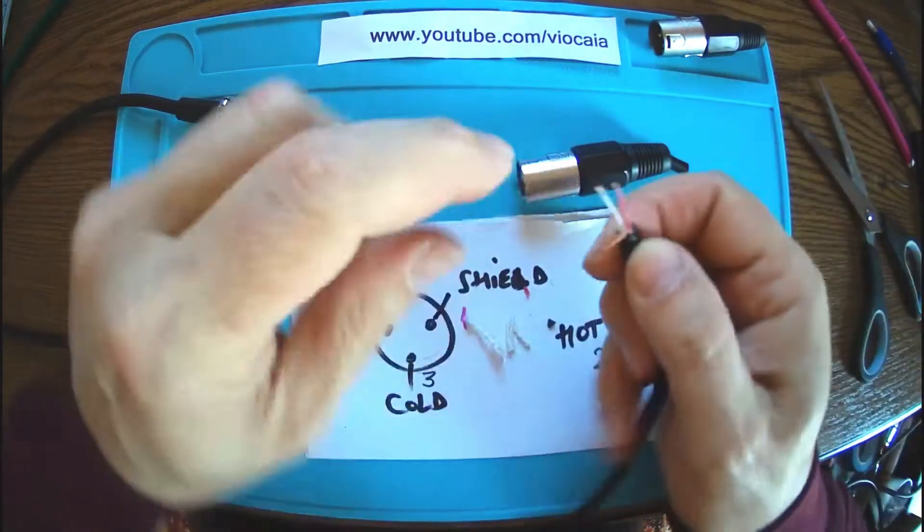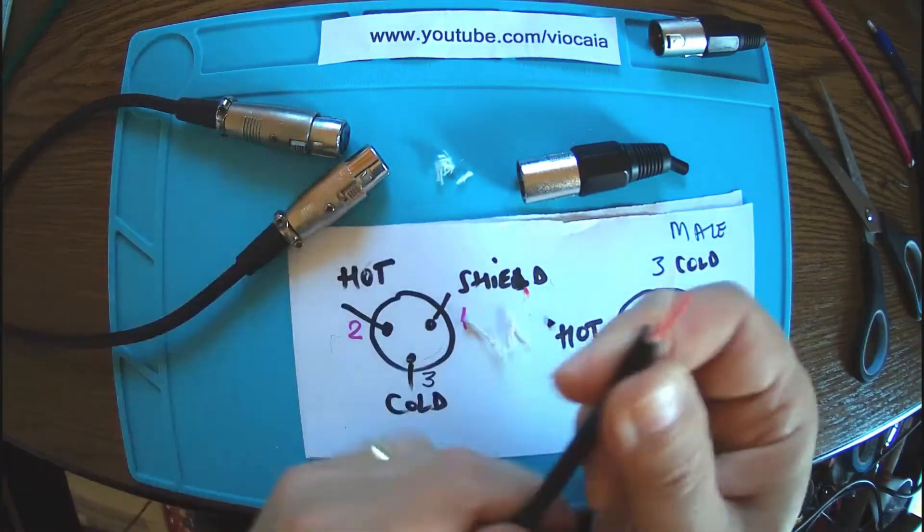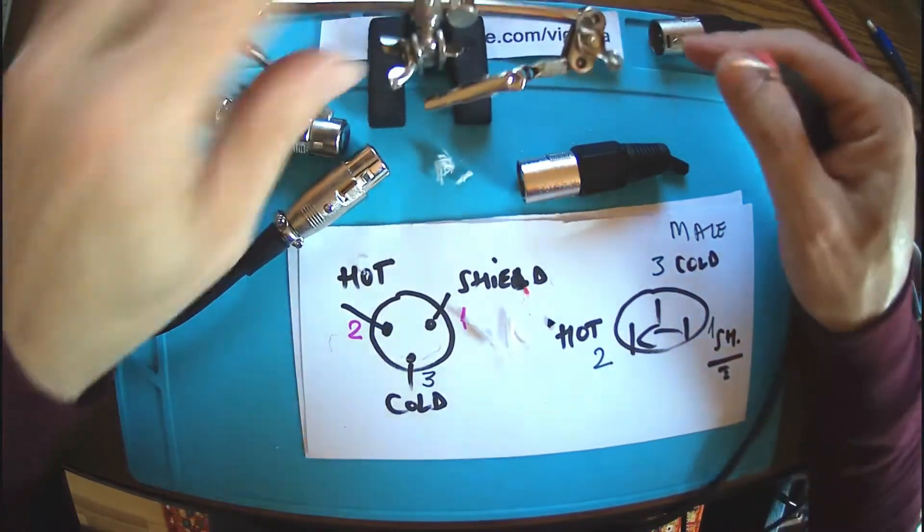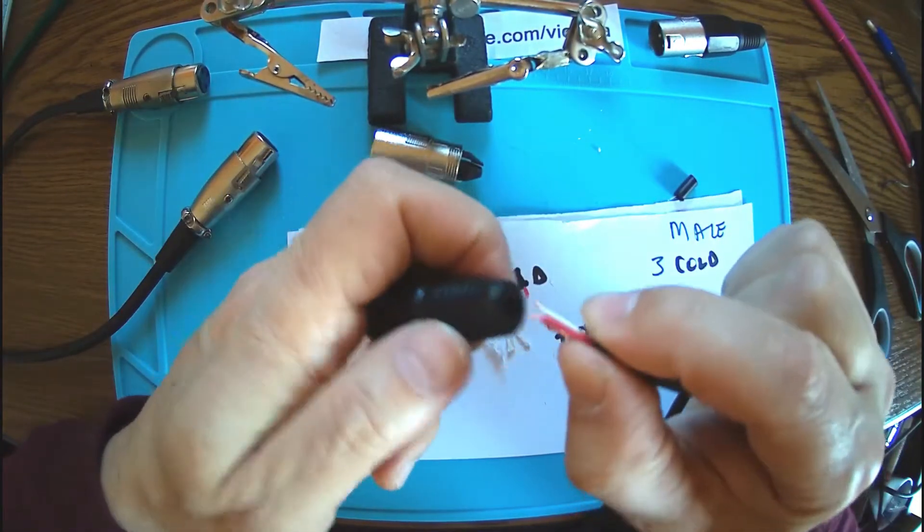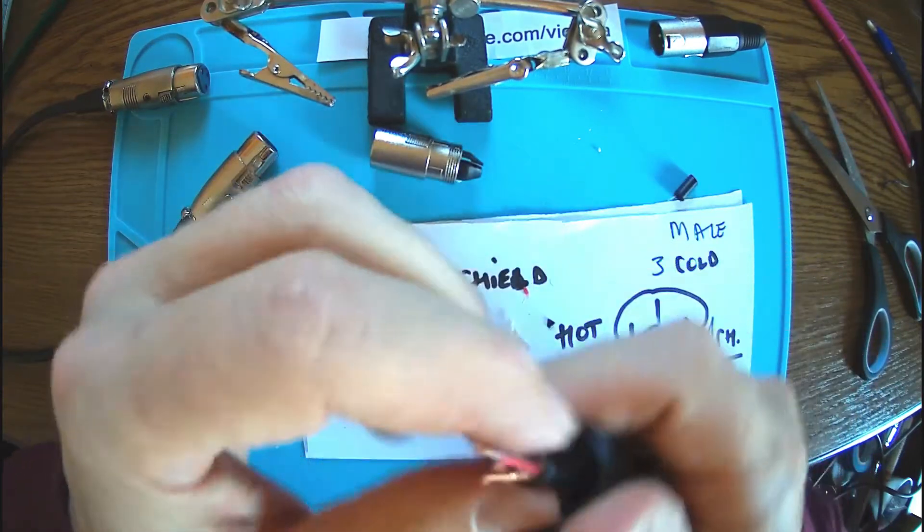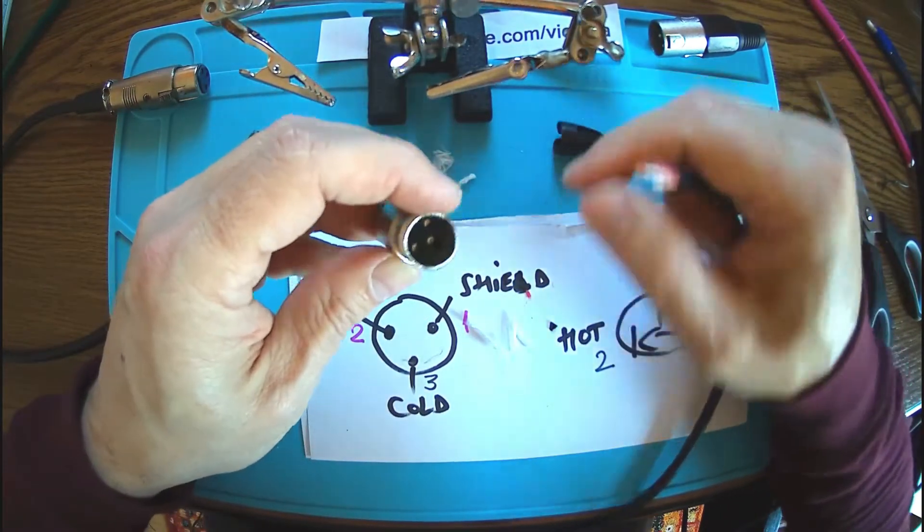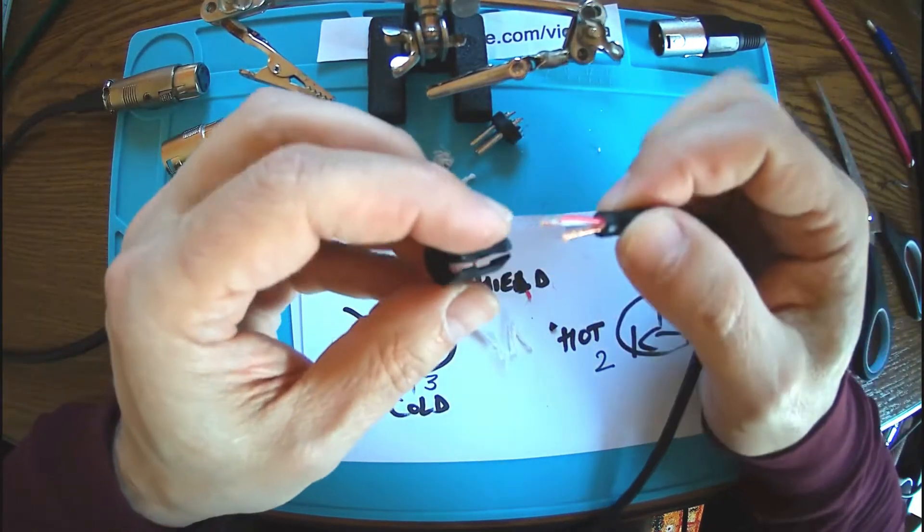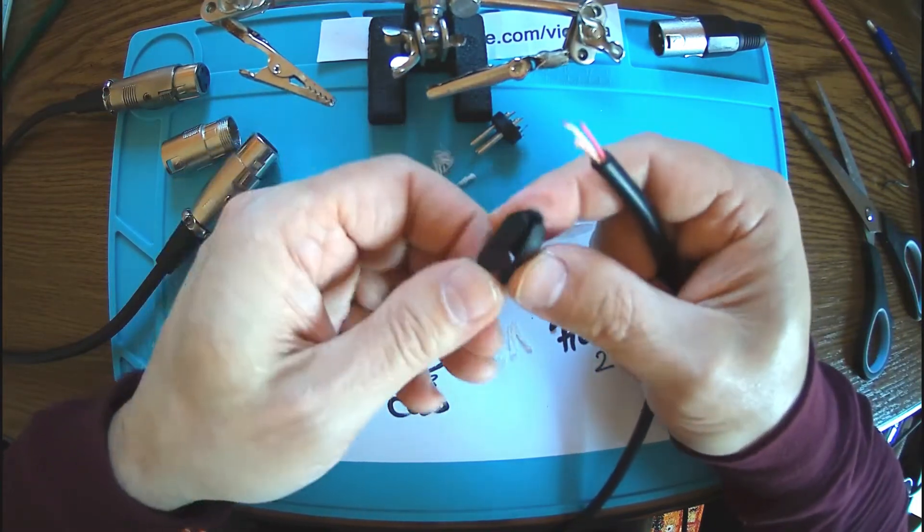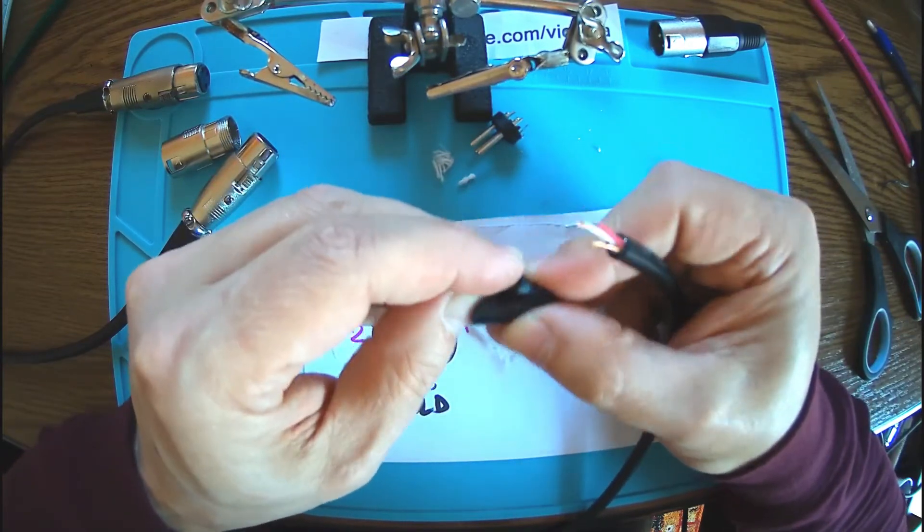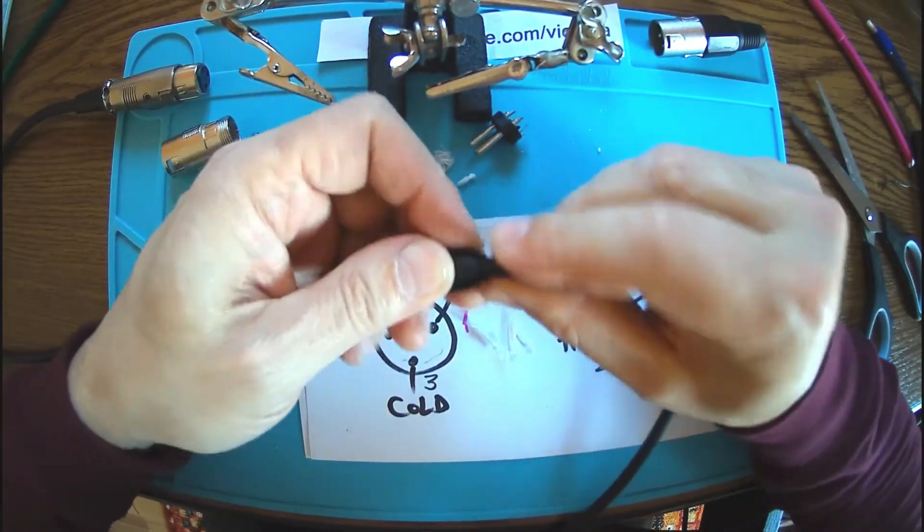This is prepared too. All we have to do now is solder this to the XLR connectors. I'm going to start with the male. Don't forget to have this on the cable. These are really nice male connectors because you don't need any screws - the top does all the necessary pressure.